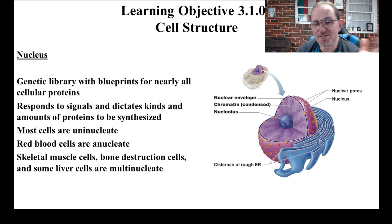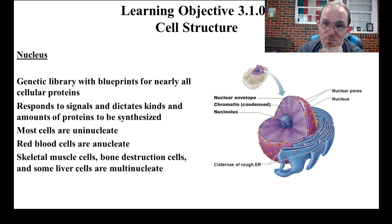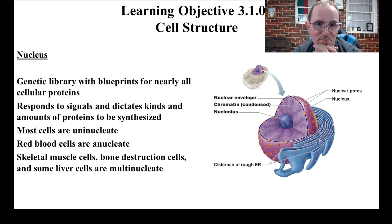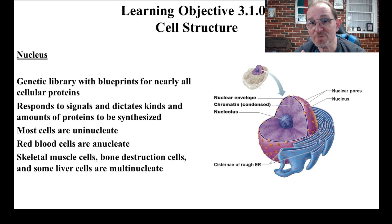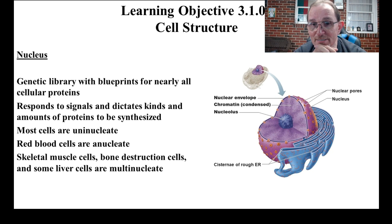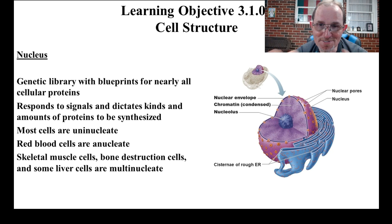The nucleus is a genetic library with blueprints for all cell proteins — like a recipe book for proteins. It responds to signals and dictates the kinds and amounts of proteins to be synthesized. Some proteins aren't made all the time at full blast; there's a control mechanism. Hormones go in there to turn on a section of the DNA so it'll be copied. Otherwise it's going to be off and no copies are going to be made.